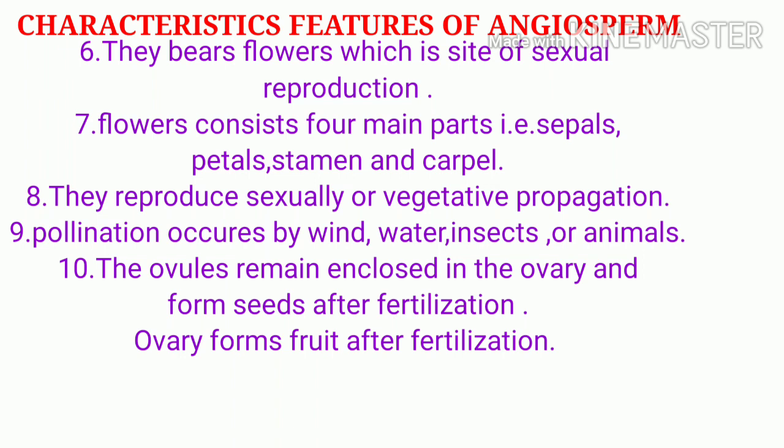Pollination occurs by wind, water, insects, or animals. In pollination, pollen grains are released from the anther and transferred to the stigma. This process is called pollination and occurs via pollinating agents such as wind, water, insects, or animals. The ovules are enclosed inside the ovary; after fertilization, ovules become seeds and the ovary becomes a fruit.